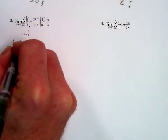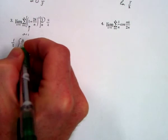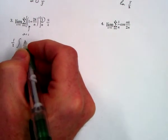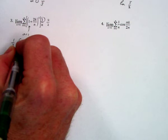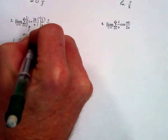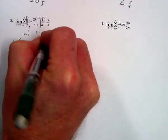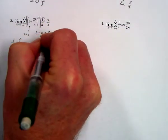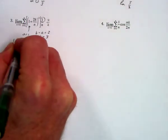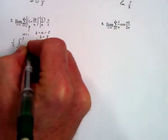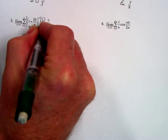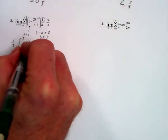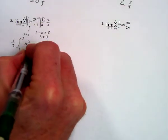So we'll have 1 half times the integral of... let me finish this part. B minus a now equals 2, so b equals 3. We can go from 1 to 3, and with that agreeing now, this will just be x squared dx.